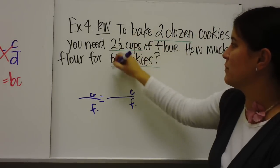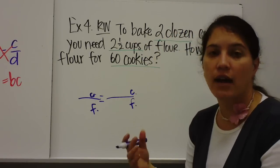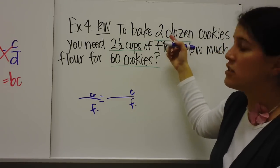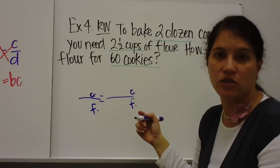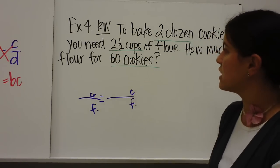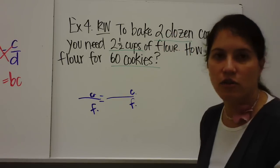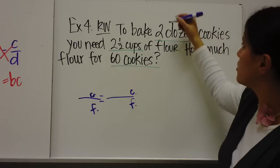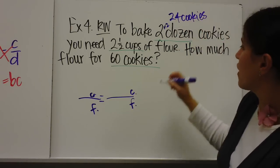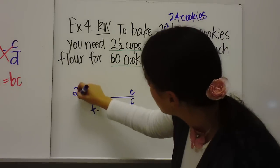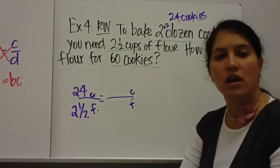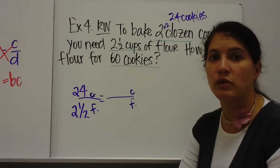Right here, we have two dozen. And right here, we have 60. We have to make those in the same units. So you have an option. You can convert two dozen to individual cookies. Or you can convert 60 cookies to dozens. It doesn't matter to me which way you do it. Two dozen. So if you have two dozen cookies, how many is that? That's two times 12. That's 24 cookies. So to make 24 cookies, I need two and a half cups of flour.